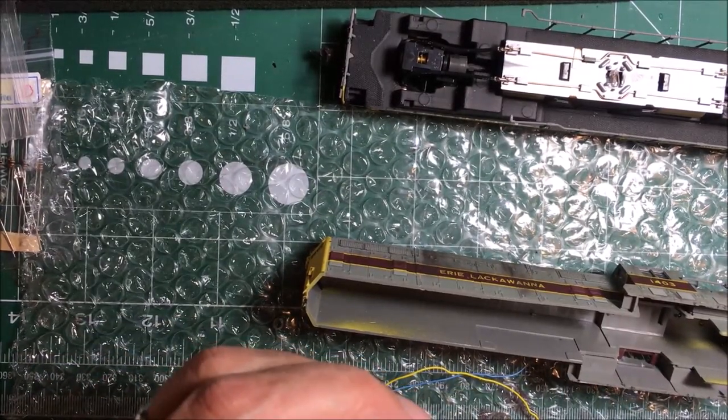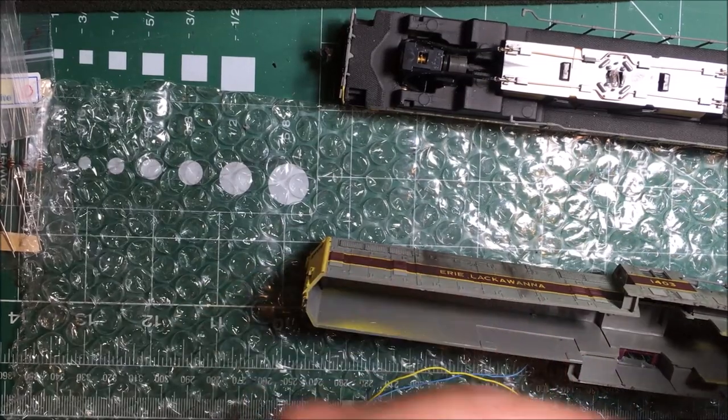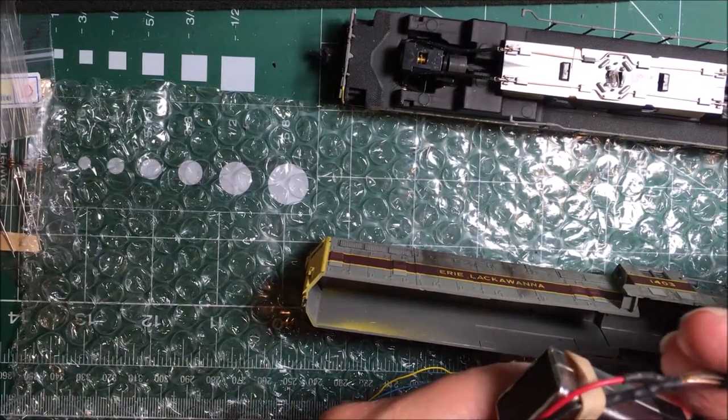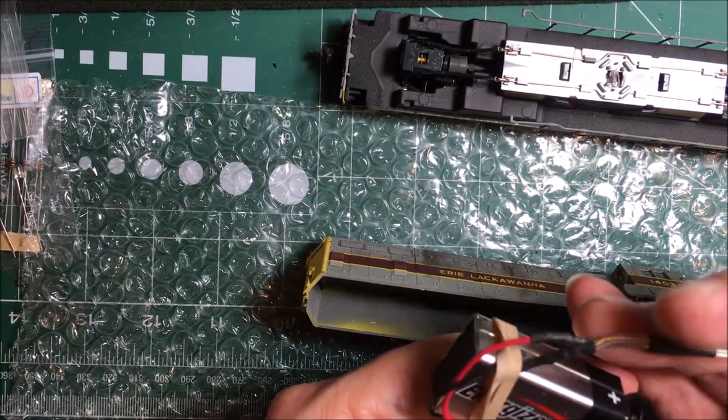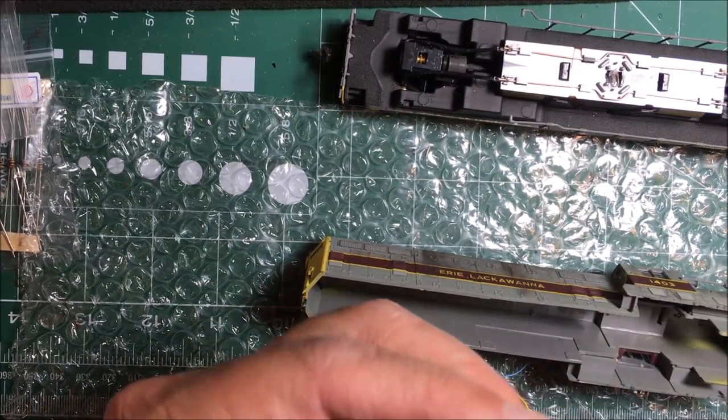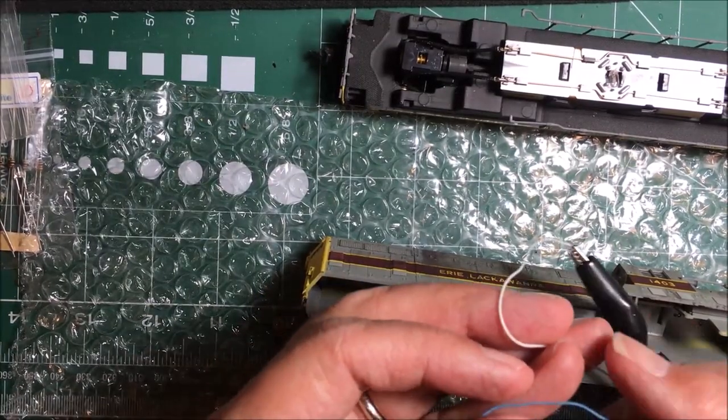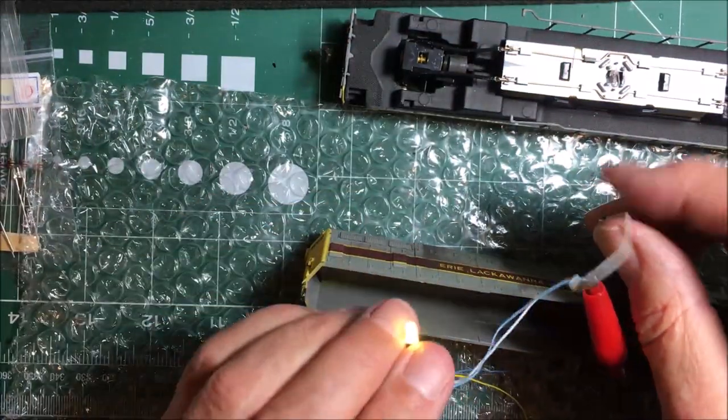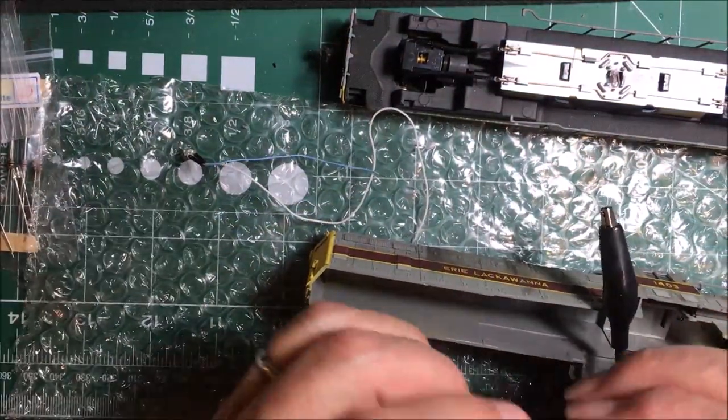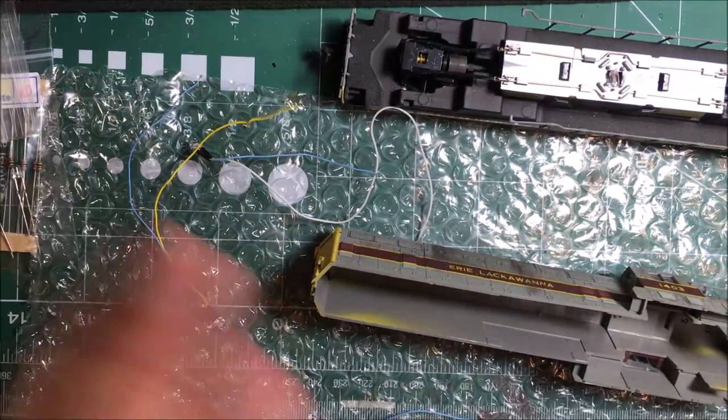All right, both of our LEDs are wired up and now we're going to test it. This is a 9-volt battery and it has a 1000-ohm resistor in line. All's good.